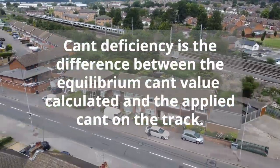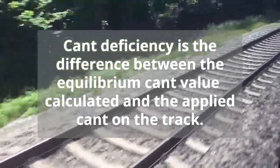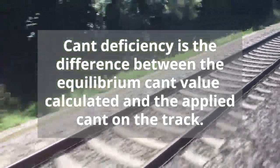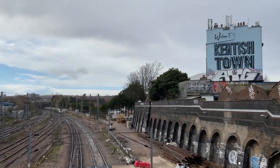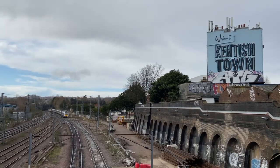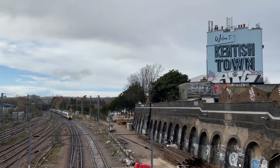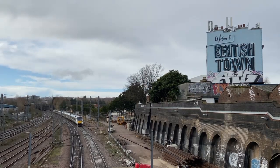Cant deficiency. This is the difference between the equilibrium cant value calculated and the applied cant on the track. It is standard practice for the applied cant to be less than that of the calculated equilibrium cant for a curve, creating a deficiency of cant. This is where cant deficiency comes from.